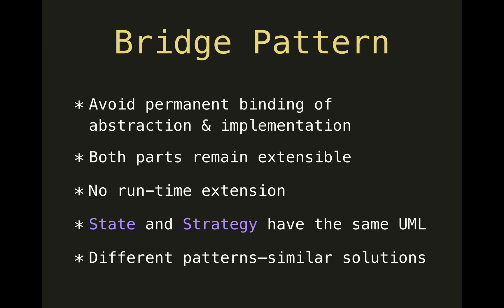When you look purely at the UML diagrams, you might notice that the patterns called State and Strategy have exactly the same UML diagrams — technically both involve two hierarchies of classes where one class uses the other. However, they are different conceptually, which is why the patterns themselves are different: the descriptions, considerations, and trade-offs differ, even though the technical solutions are the same.